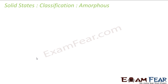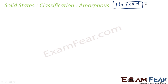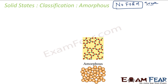The next topic is amorphous. The word amorphous itself came from the Greek word 'amorphous', meaning 'no form'. Amorphous solids consist of particles of irregular shape — there is no fixed pattern. These are particles of haphazard, irregular shape.